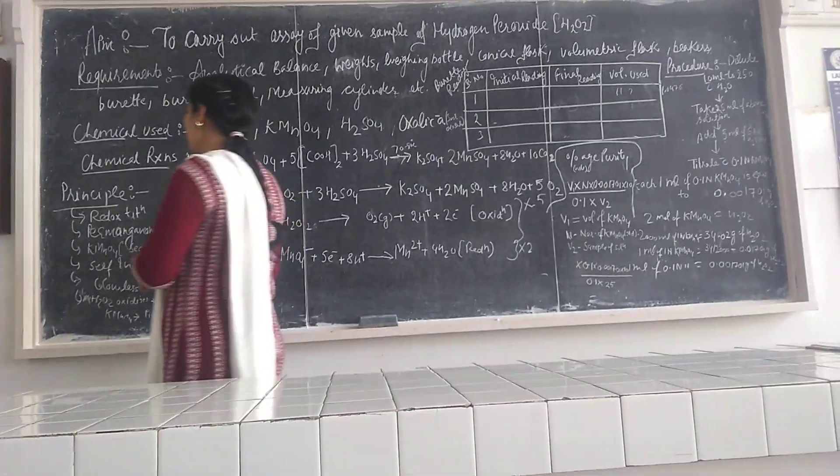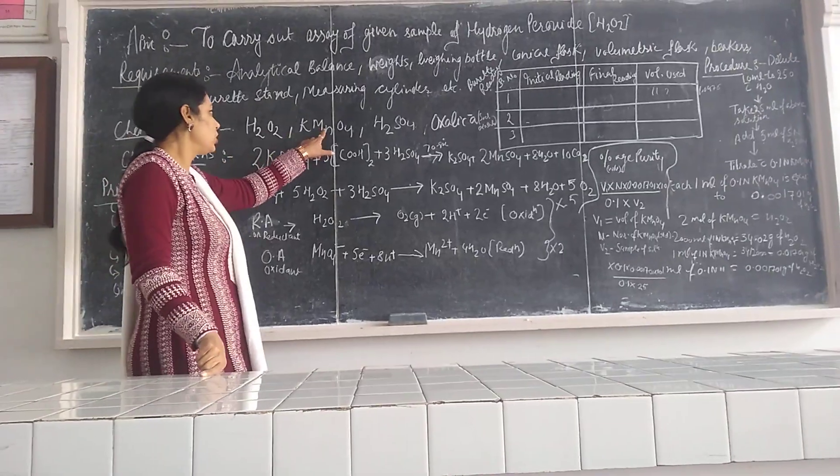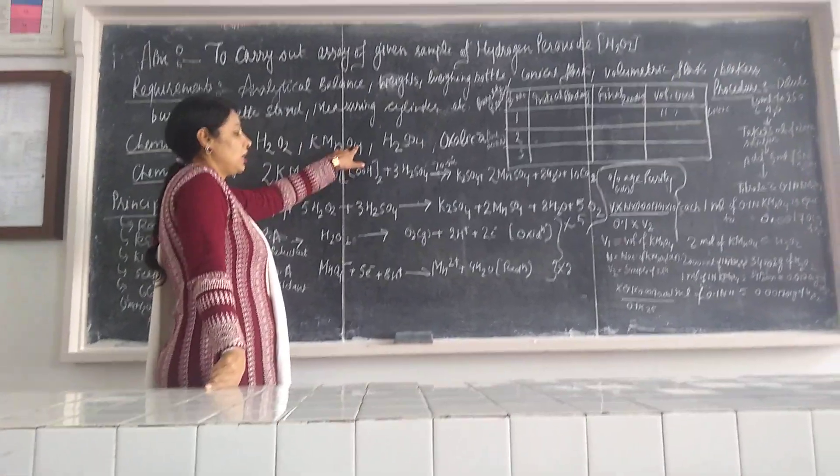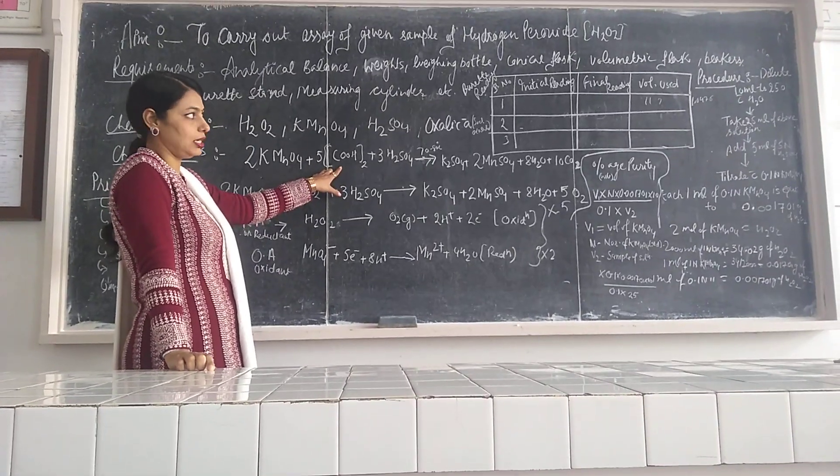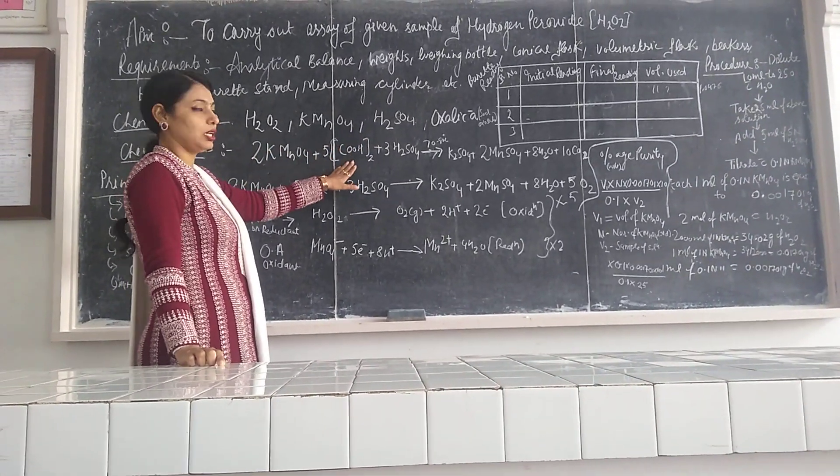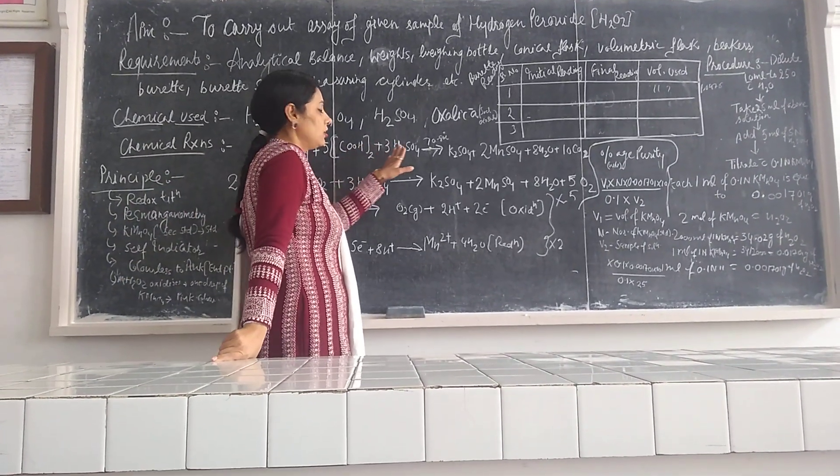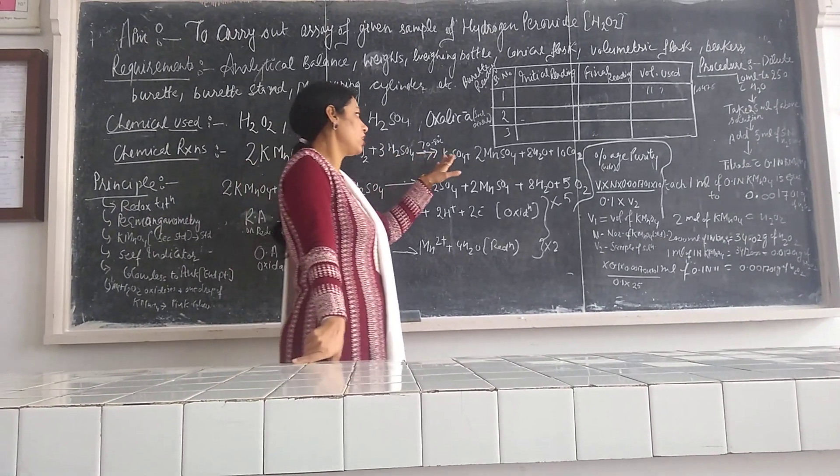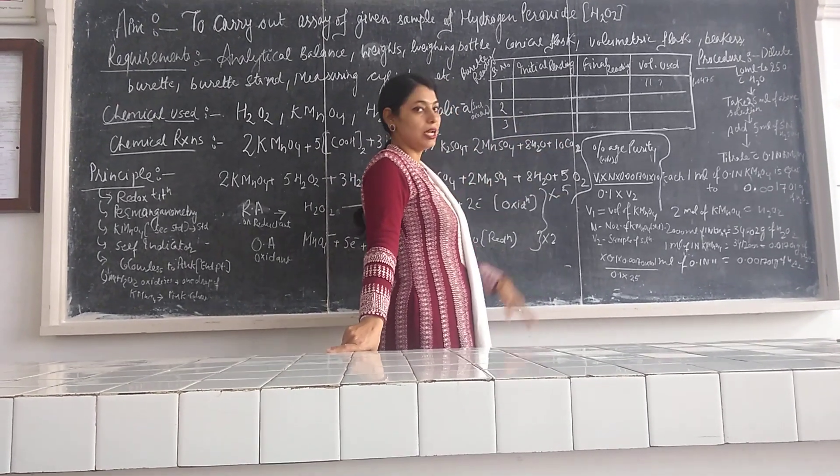So here are some chemical reactions. For the first practical when we standardize our KMnO4, KMnO4 can be standardized with oxalic acid or sodium oxalate. Here I am taking oxalic acid. So it will react with the oxalic acid in the presence of sulfuric acid to give potassium sulfate, manganese sulfate, water molecules, and carbon dioxide.